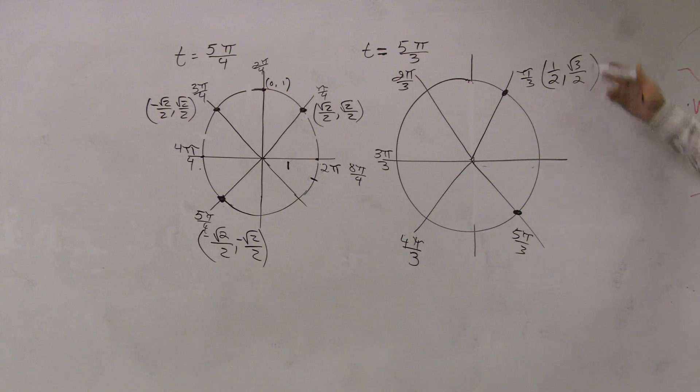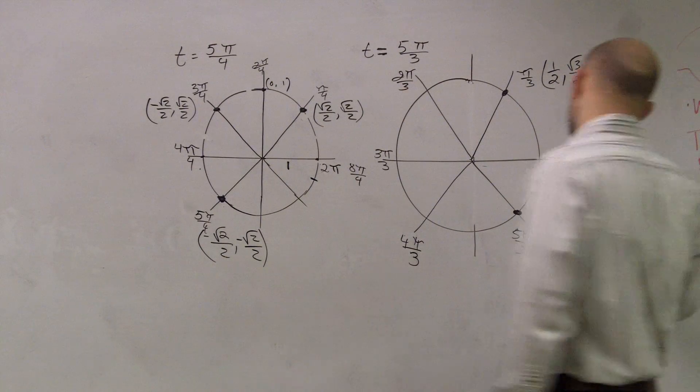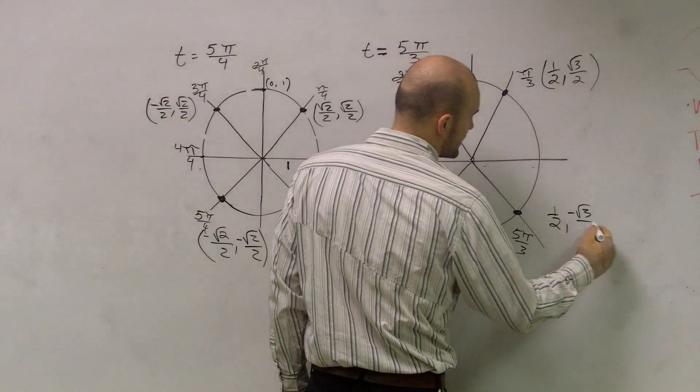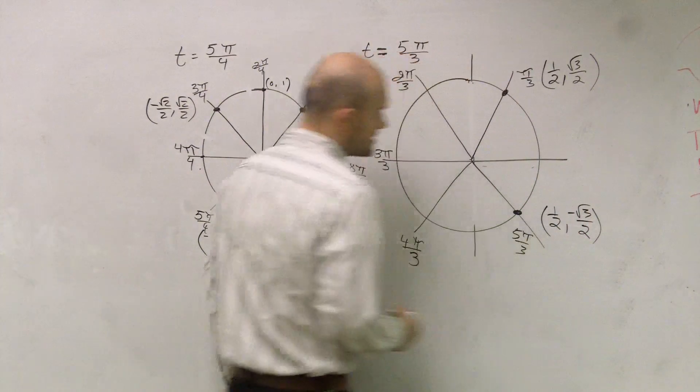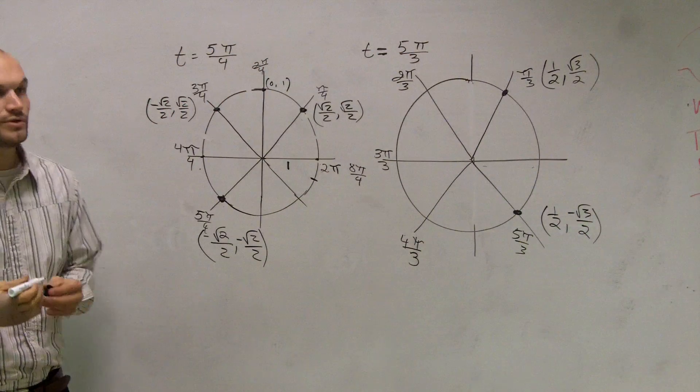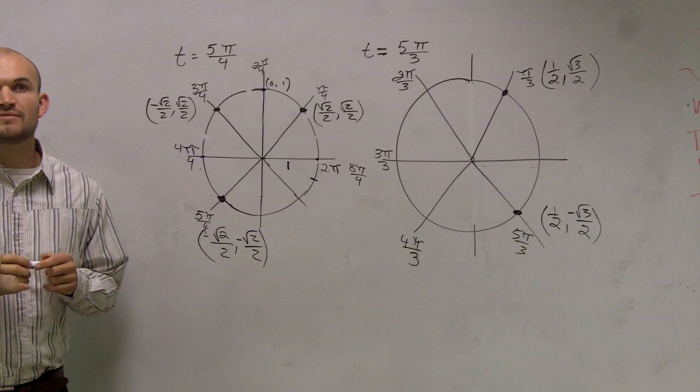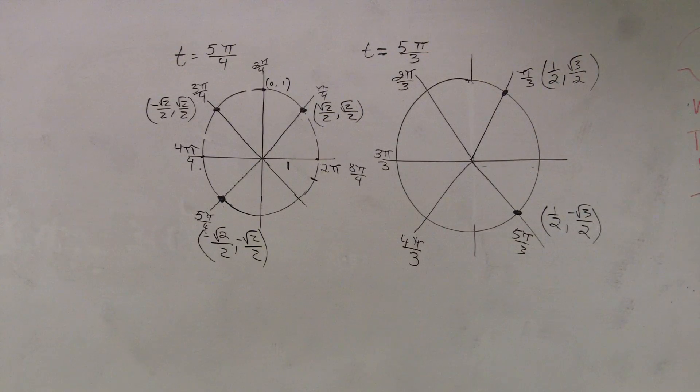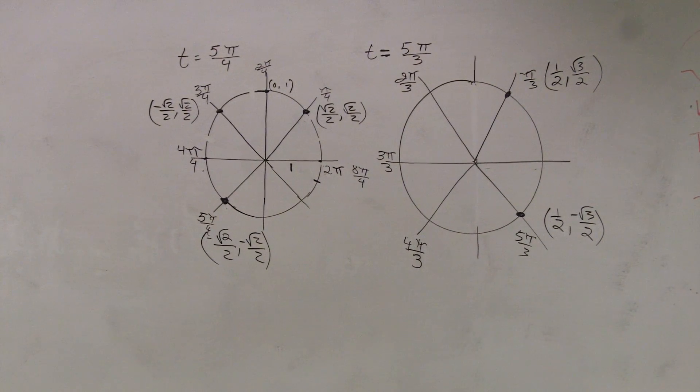But here it's a positive y. Down here, it's going to be a negative y. So it would be 1 half comma negative square root of 3 over 2. So that is how you find the coordinate point for those two lines. Does that make sense?